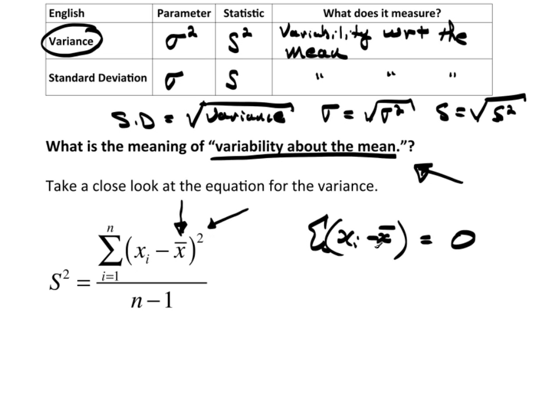So that's why we square it, because any value such that the sample average is bigger than the observation is going to be negative, but we square it so it becomes positive. Any value where the sample average is less than the observation, then it's going to be positive. If you square it, it's still positive.